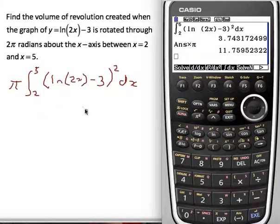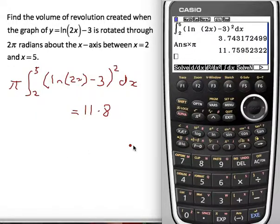If we're doing three significant figures, let's just jot that answer down, 11.8. Now that's one way of doing it.